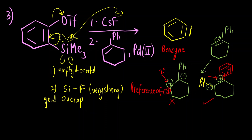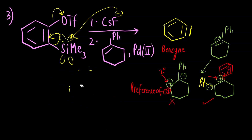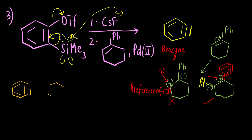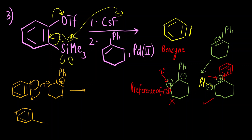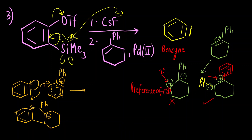This carbanion will attack the benzyne intermediate. This will open up. We will get a benzene ring. Numbering 1, 2, 3, 4, 5, 6 — on carbon 1 there is Ph and a positive charge. The negative charge that is formed will pick up a proton and it will become a benzene ring.